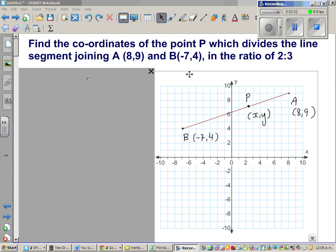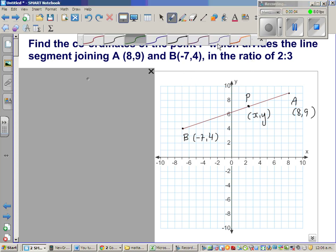Find the coordinates of P, which divides the line segment joining A(8,9) - so this is point A(8,9) - and B(-7,4), in the ratio of 2 is to 3.